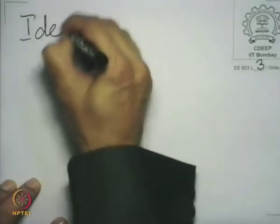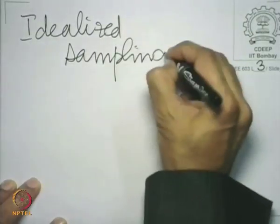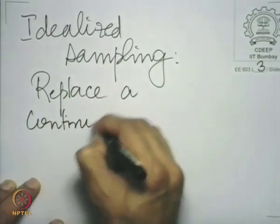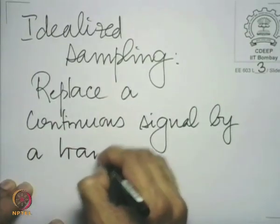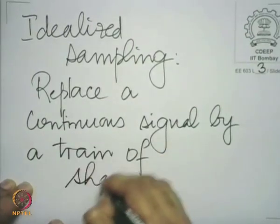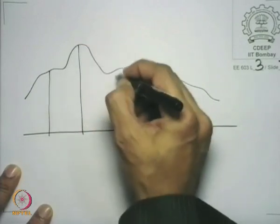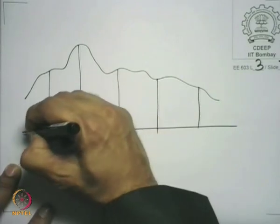Idealized sampling means to replace a continuous signal by a train of sharp pulses. What we are saying is if you have this continuous signal and if you sample it here and here and then here and here and here, what you are doing is ultimately considering this sampled signal.